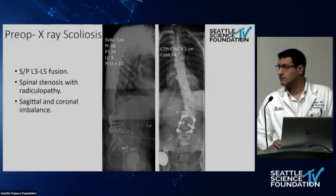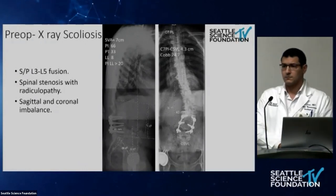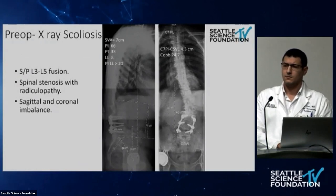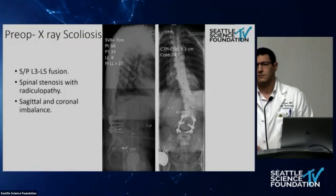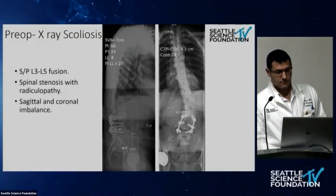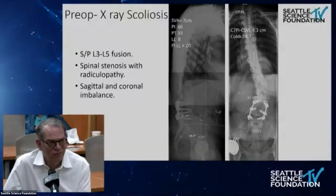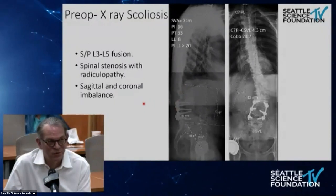Without preoperative films, Dr. Hart speculates that there was already an underlying curve and this fusion was done short into that curve. Looking critically, there's not really a lot of lordosis in that construct. He notes that even in short — in this case a two-level — fusion, it's very important to reestablish anatomic alignment to the greatest degree possible in the fused segment.